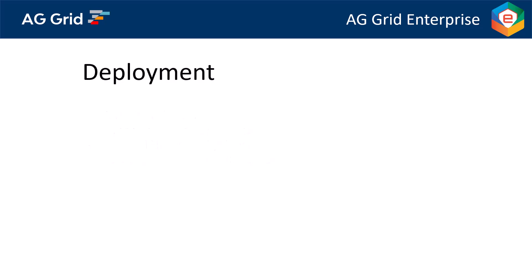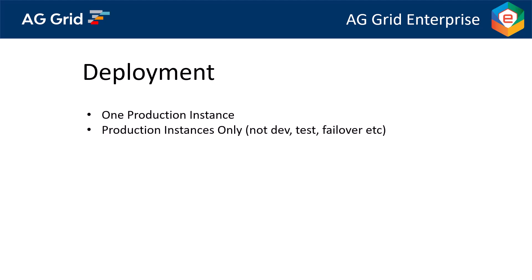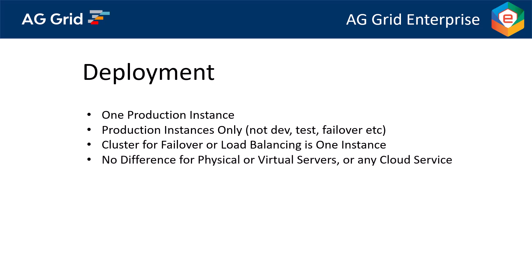What counts as one deployment? A deployment is one production instance. We do not require separate licensing for developer instances, testing instances, or even disaster recovery environments — it's just your live production environments that need a license. If you have a cluster in production and the instances within that cluster are only for load balancing or failover, then that is still counted as one production instance. An entire cluster is one deployment if the purpose of that cluster is just for failover or load balancing. It does not matter if you're deploying on physical servers, virtual servers, or any other type of cloud service.